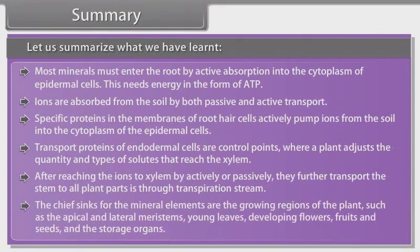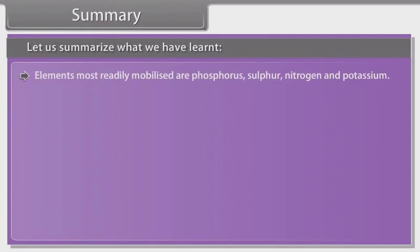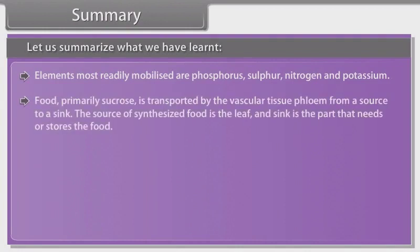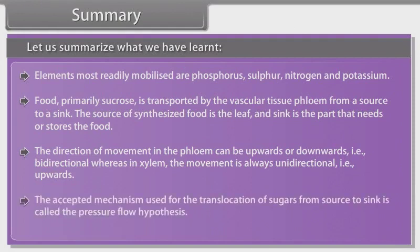The chief sinks for the mineral elements are the growing regions of the plant, such as the apical and lateral meristems, young leaves, developing flowers, fruits and seeds, and the storage organs. Elements most readily mobilized are phosphorus, sulfur, nitrogen, and potassium. Food, primarily sucrose, is transported by the vascular tissue phloem from a source to a sink; the source of synthesized food is the leaf, and the sink is the part that needs or stores the food. The direction of movement in the phloem can be upwards or downwards, which is called bidirectional, whereas in xylem the movement is always unidirectional upwards. The accepted mechanism used for the translocation of sugars from source to sink is called the pressure flow hypothesis.